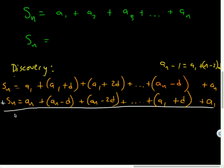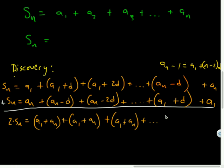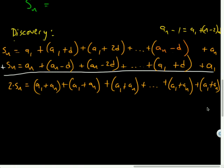So S n plus S n is how many S Ns? Two S sub Ns. A1 plus A N is just A1 plus A N. What happens when I add these two together? A1 plus A N. The Ds cancel out and I get A1 plus A N. Plus the two Ds and the negative two Ds cancel out and I get A1 plus A N. Plus what happens here? A1 plus A N. And what's this? A1 plus A N.